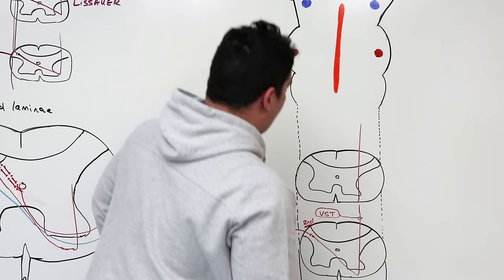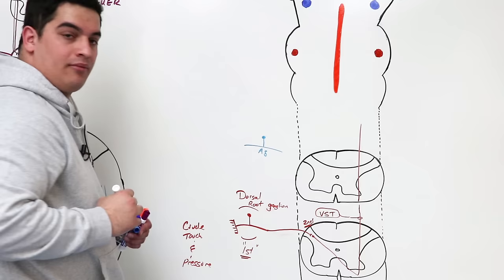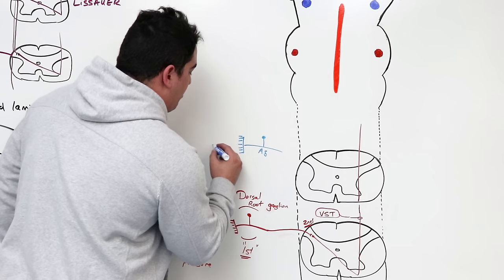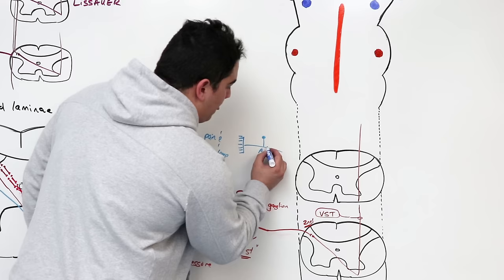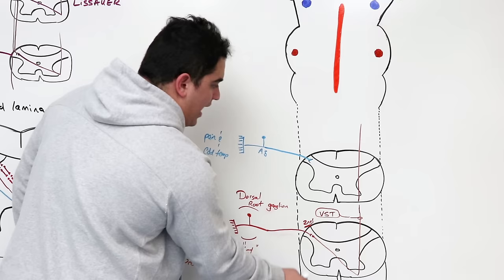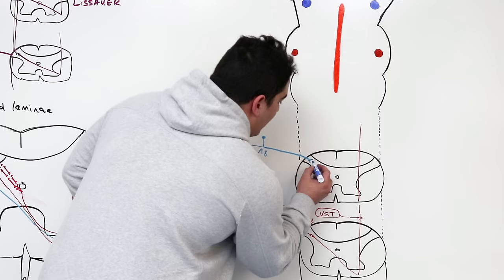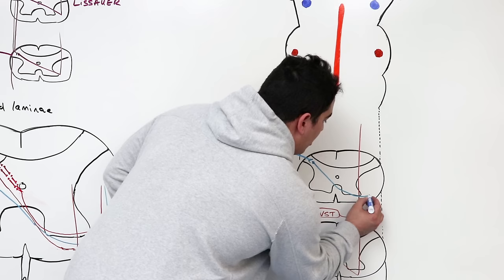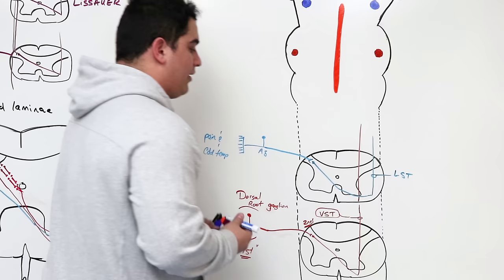Now the A-delta pathway: the A-delta fiber picks up pain and cold temperatures via mechanical stimuli. It sends information inward, can ascend or descend via the tract of Lissauer one to three segments, synapses on cell bodies in the dorsal gray horn, then crosses over through the anterior white commissure and goes upward into the lateral white column. This is the lateral spinothalamic tract. So you have the ventral spinothalamic tract and the lateral spinothalamic tract.